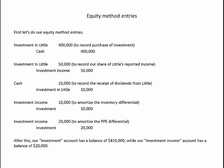After this, our investment account has a balance of $410,000 — our initial cost of $400,000, plus $50,000 of income, minus $10,000 in dividends, minus $10,000 of amortization, minus $20,000 of amortization. Our investment income account has a balance of $20,000 — the reported earnings of $50,000 minus the combined amortization of $30,000.